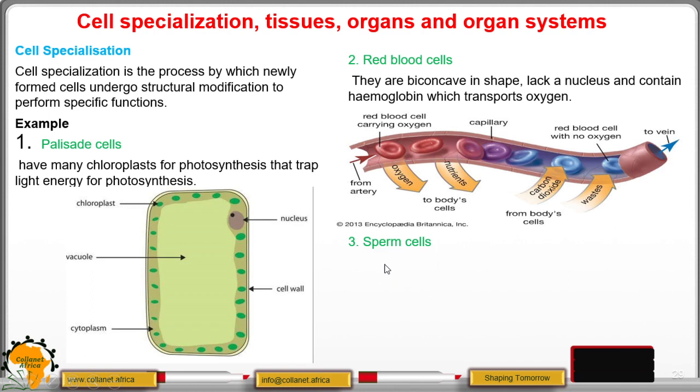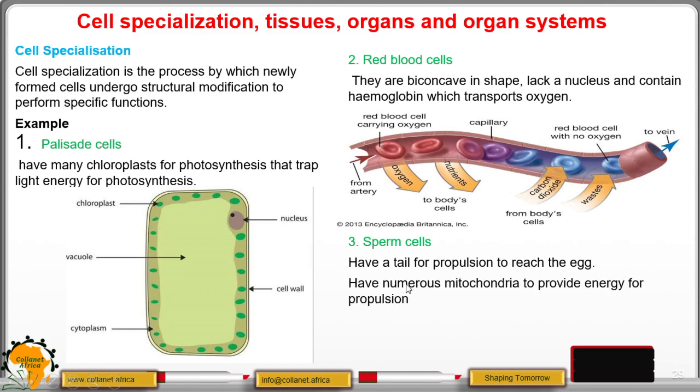The other specialized cell is the sperm cell, which has a tail for propulsion or forward push to reach the egg or the ovum. It also contains many mitochondria to provide energy for propulsion.